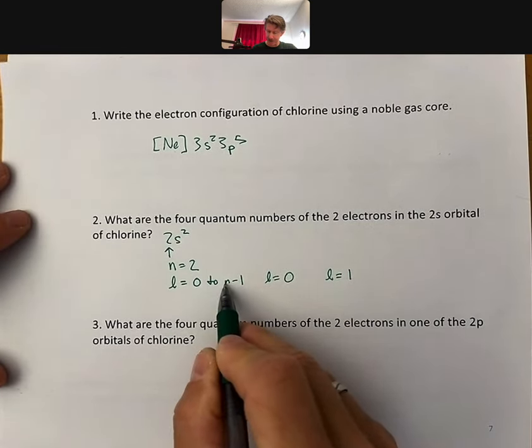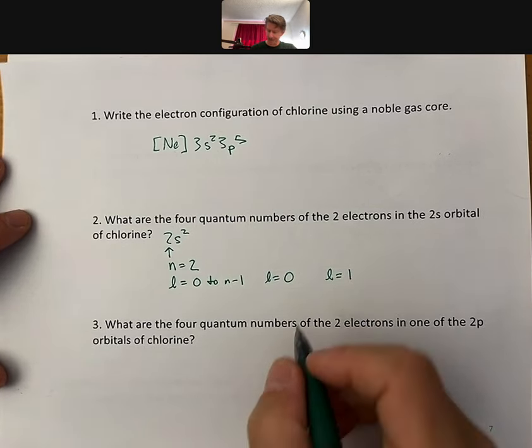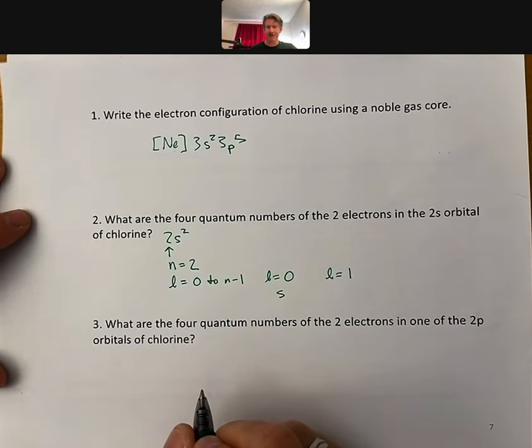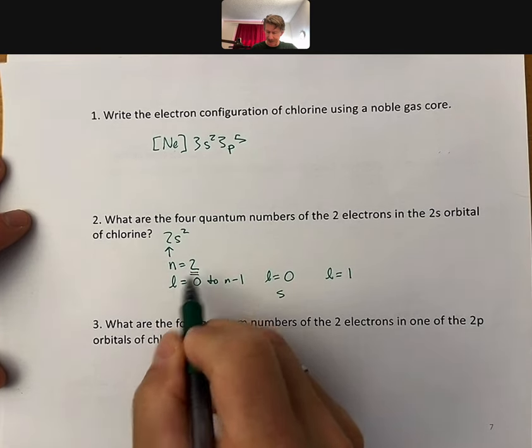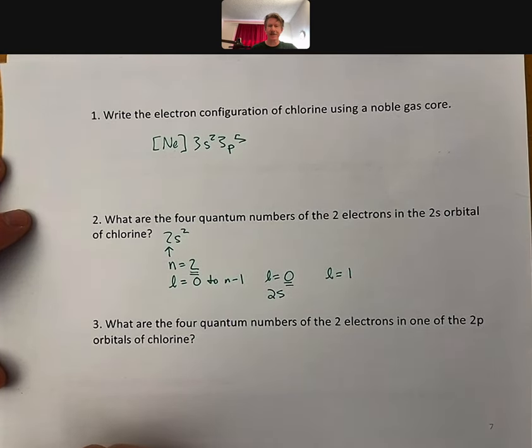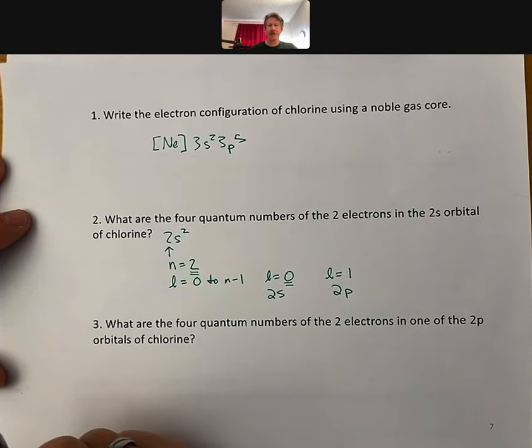That means these are the solutions for l, and l equals 0 is always an s. So if we've got n equals 2 and l equals 0, that is the 2s sublevel. And then 2p would be the l equals 1 when n equals 2.